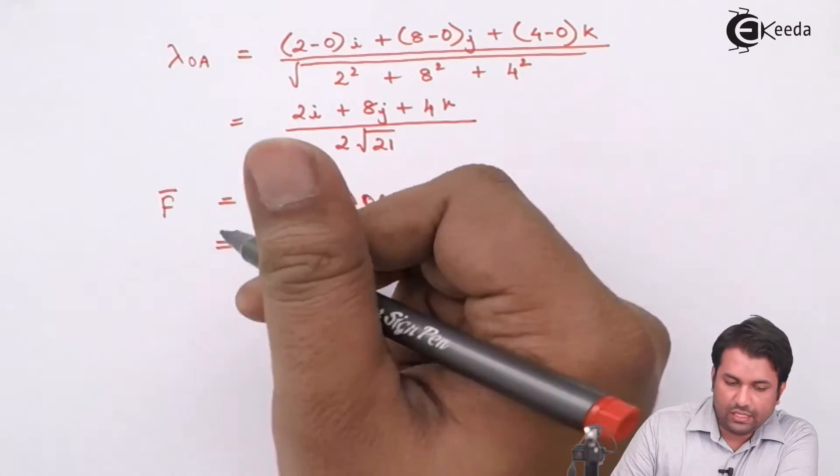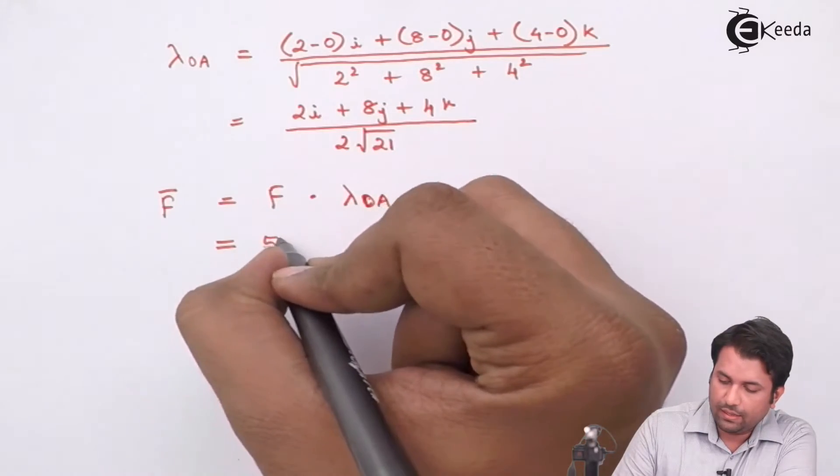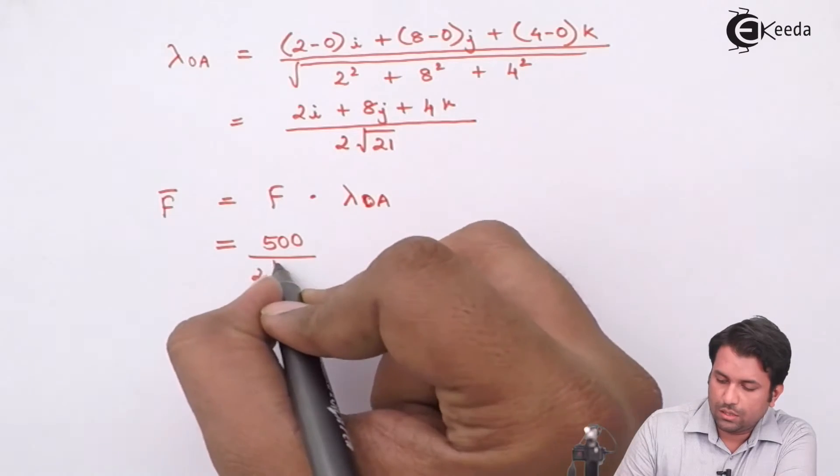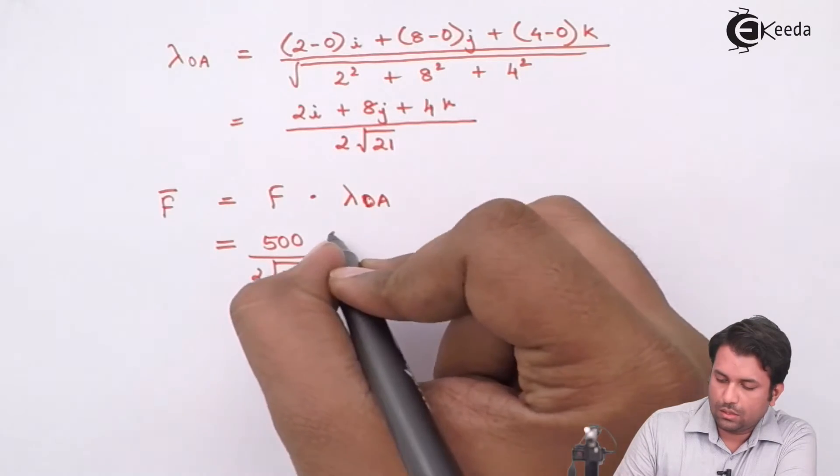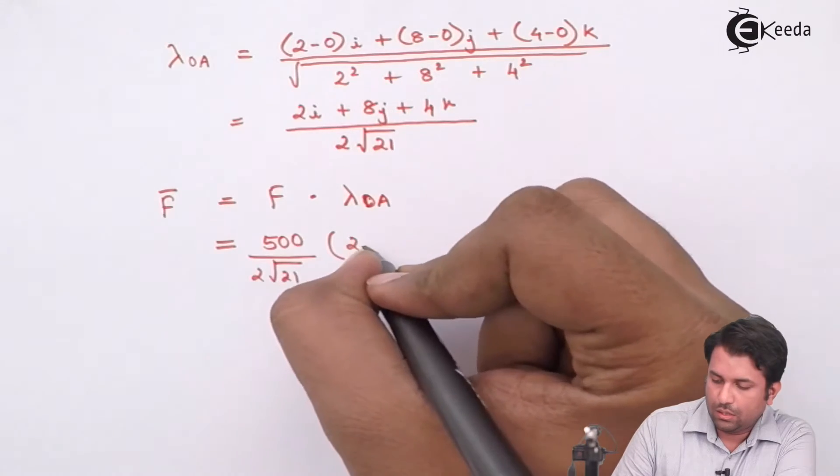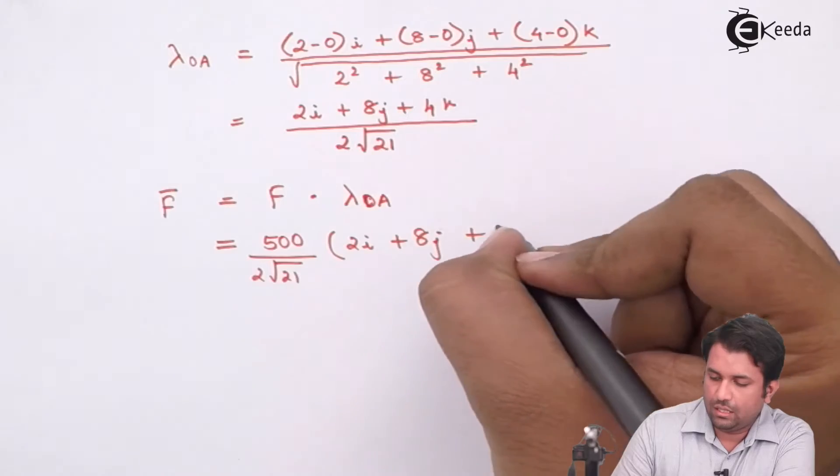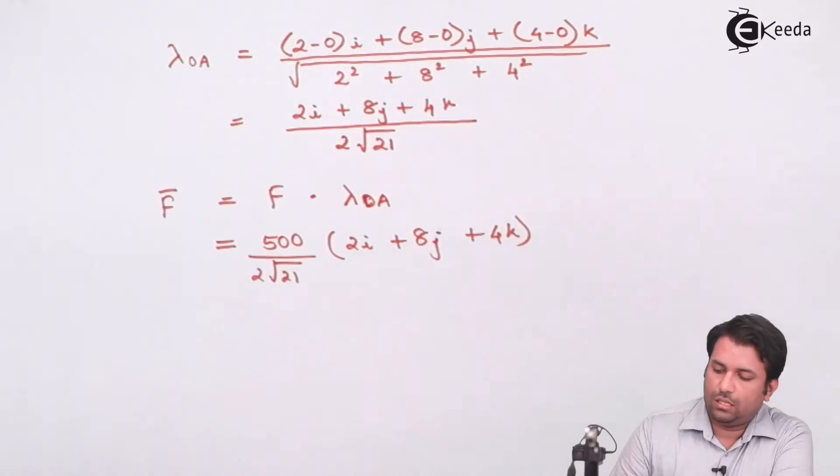Magnitude is given to me as 500 Newtons and the dot product we have just calculated is this.